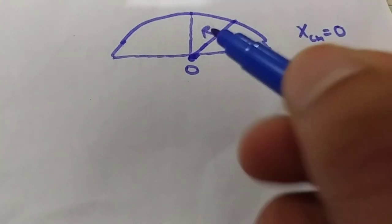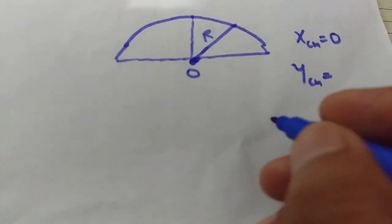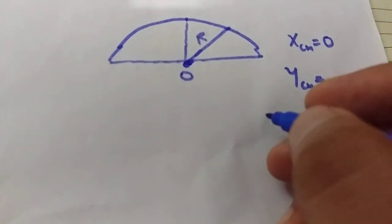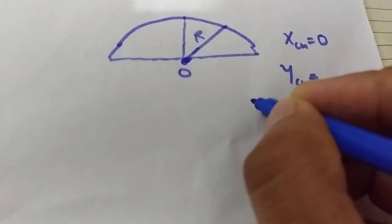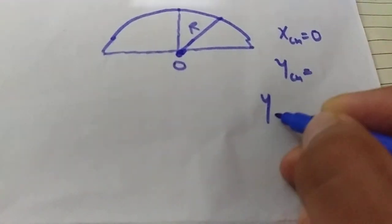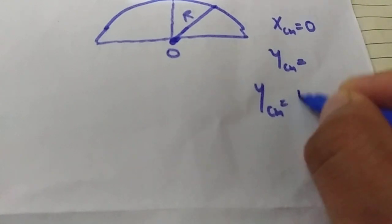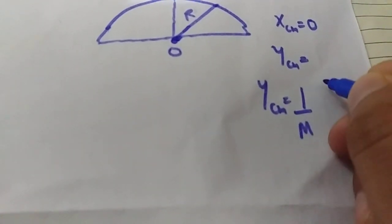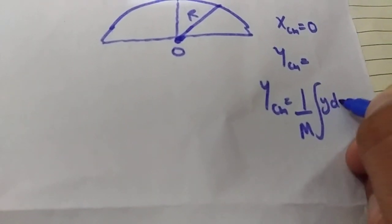There is mass distribution on the circumference — half of the circumference, obviously. So this is a continuous mass distribution. For continuous mass distribution, I will use the y-coordinate of center of mass formula: y_cm = (1/m) ∫ y dm.